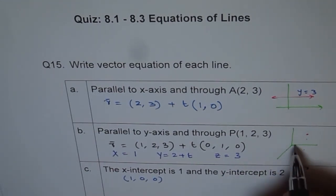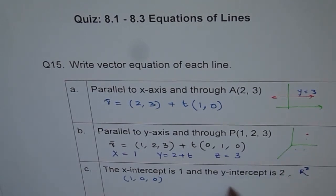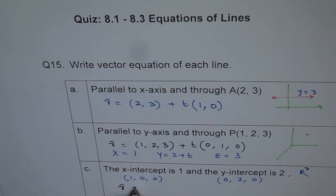y-intercept is 2. y-intercept of 2 will mean 0, 2, 0. So, we have two points and now there is no problem in writing a vector equation. The vector equation for this is, let me write here as R equals 2. We can choose any one of these points. The point is 1, 0, 0.